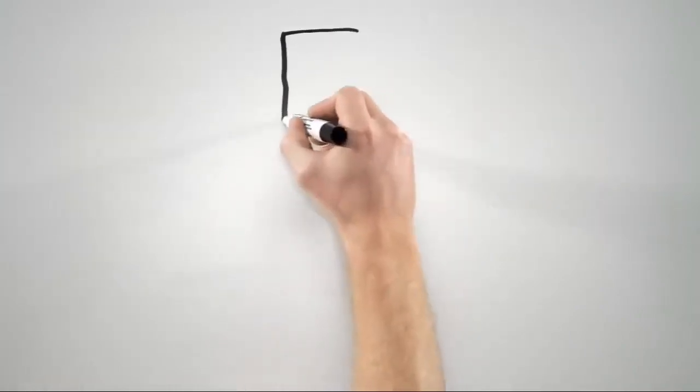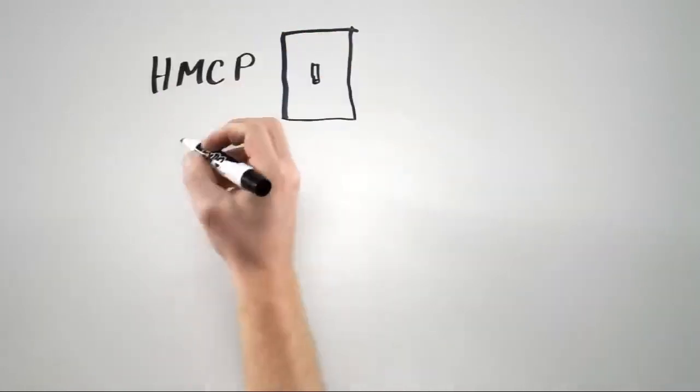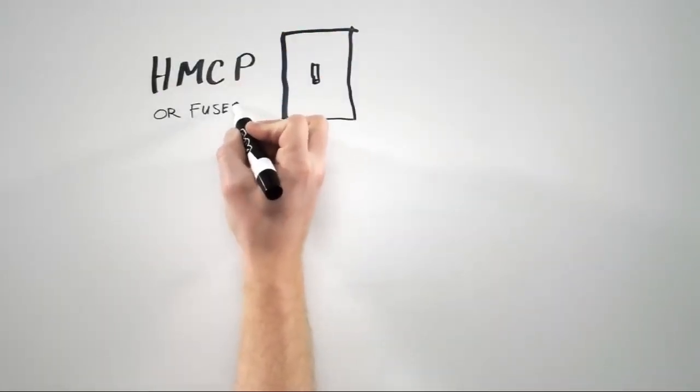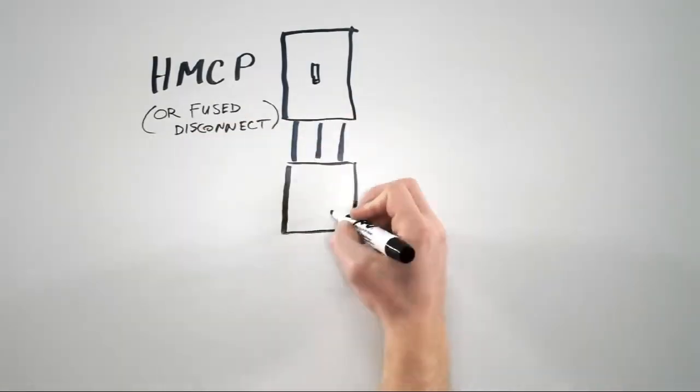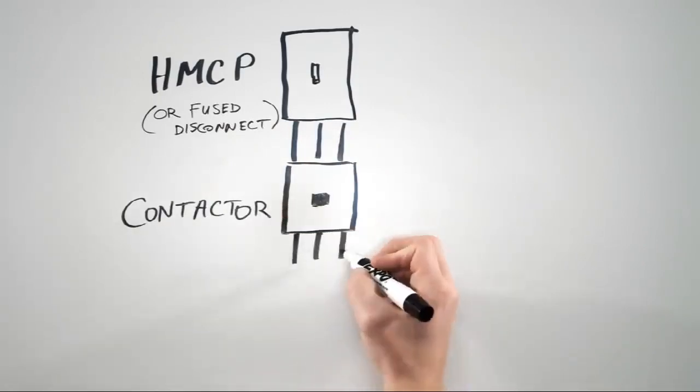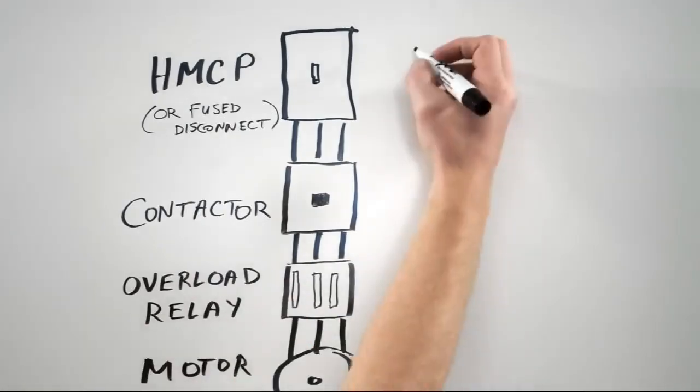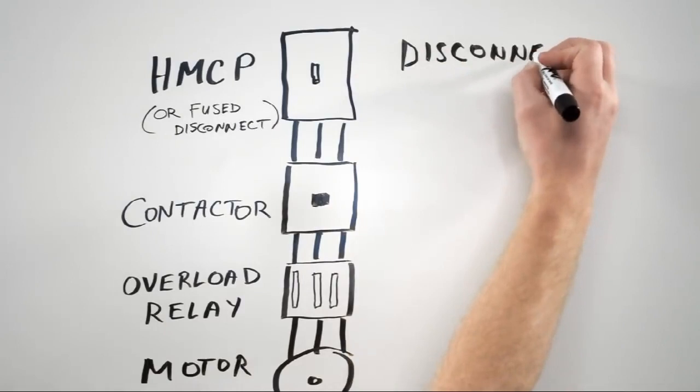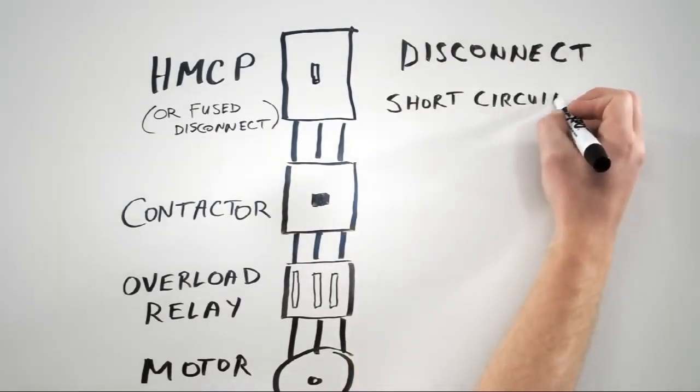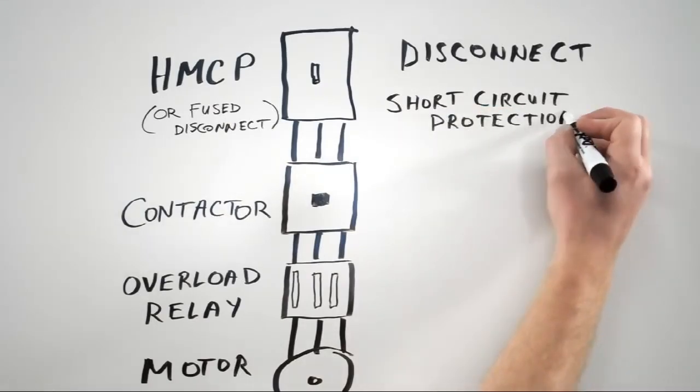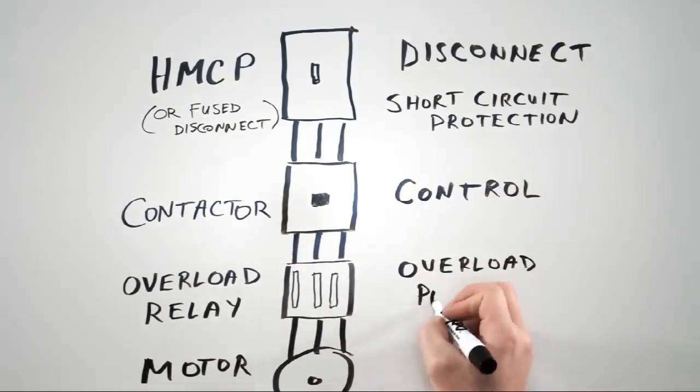Now that we've covered motor protection and motor control, let's put it all together. At the top of the circuit we have our HMCP breaker, or alternately we could use a fuse disconnect switch. Next we have the contactor, followed by the Overload Relay. Lastly, we have the cables connecting the Overload Relay to the motor. In this setup, the HMCP provides a way to disconnect the entire circuit from power, as well as providing short circuit protection, since it still has the magnetic protection inside. The contactor provides a means of controlling the motor, and then finally the Overload Relay protects our motor from overload conditions.